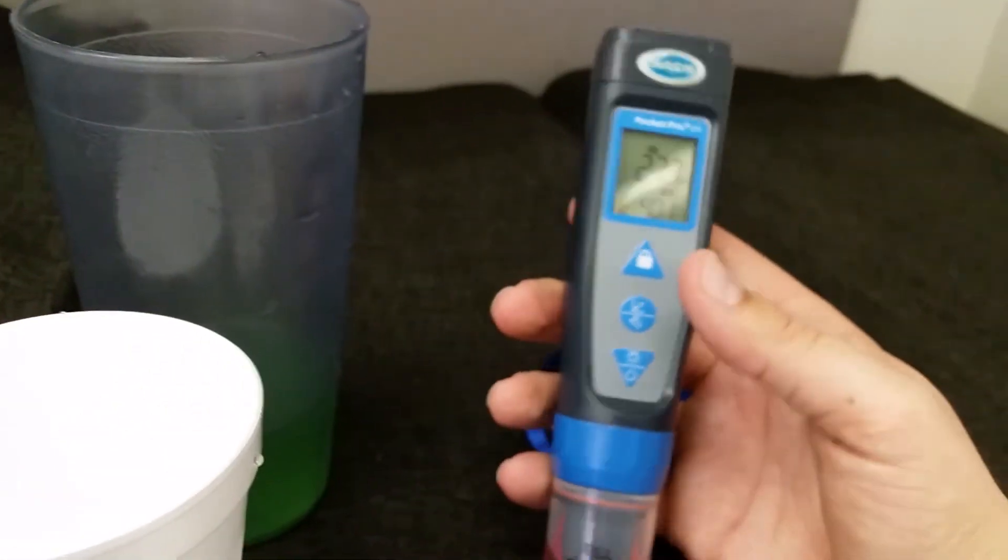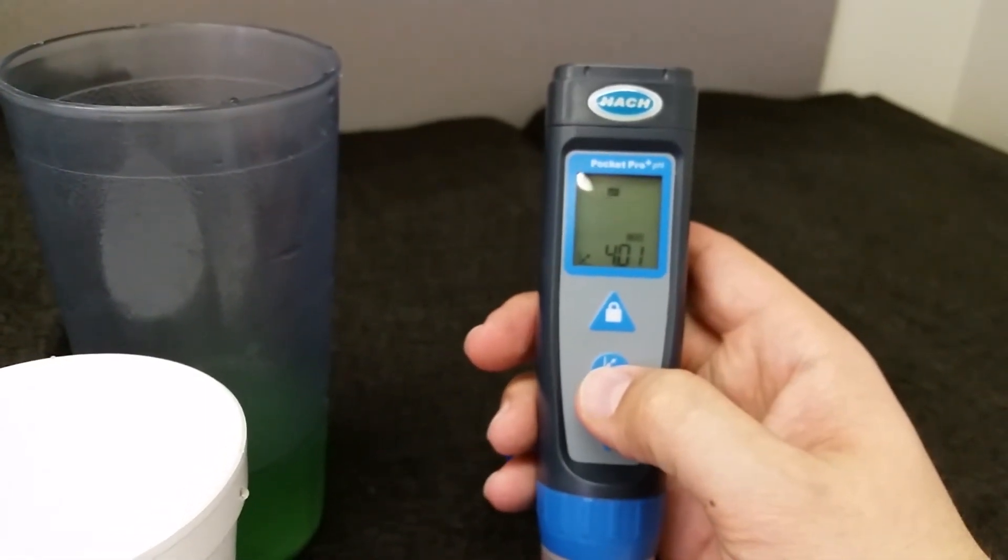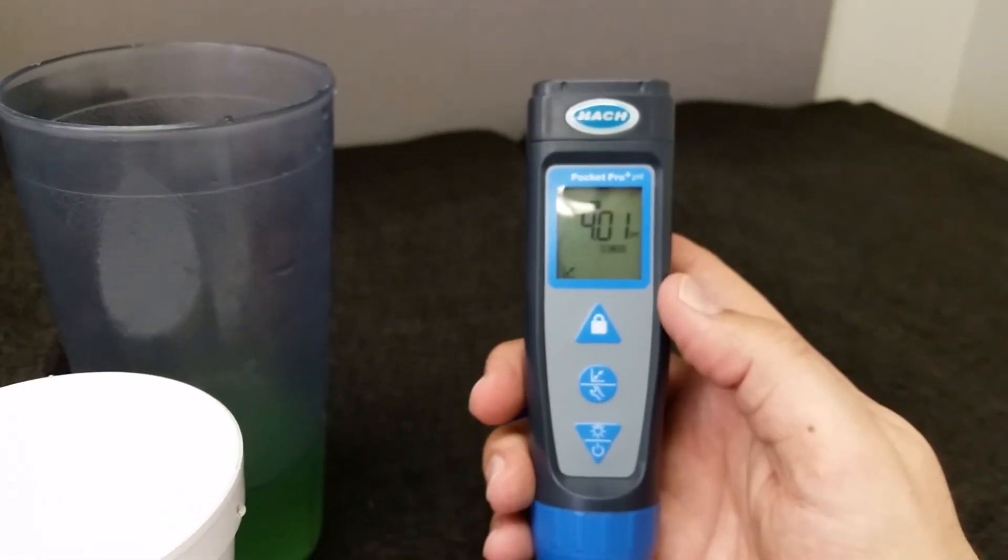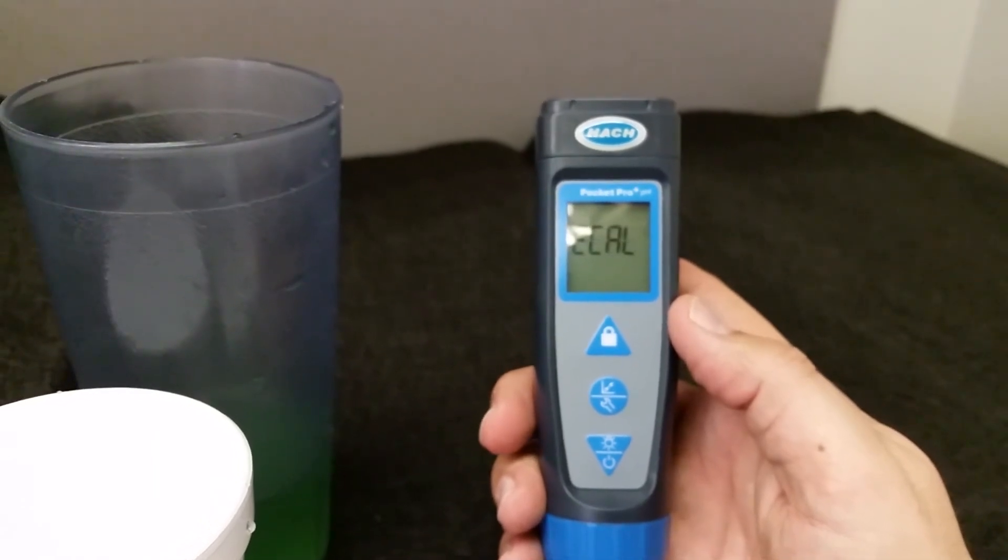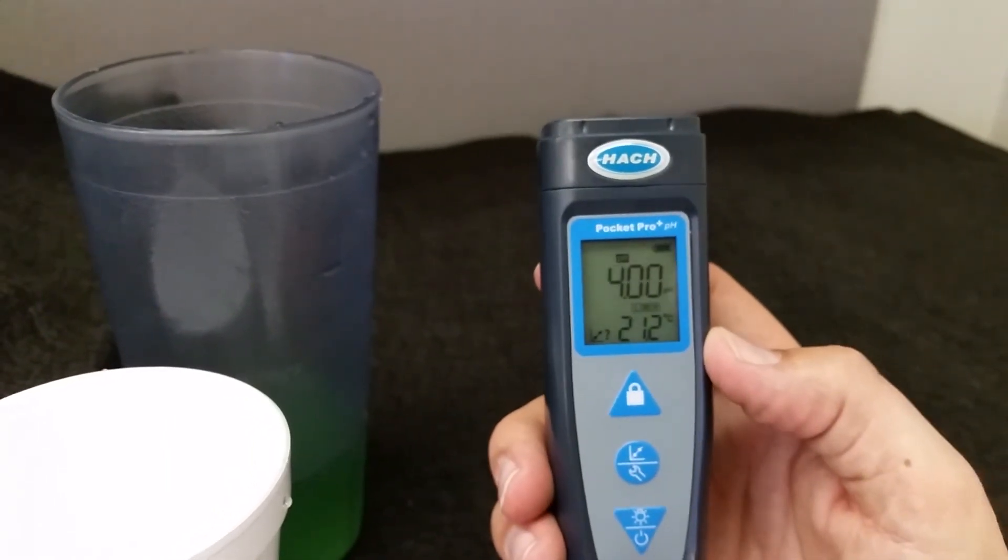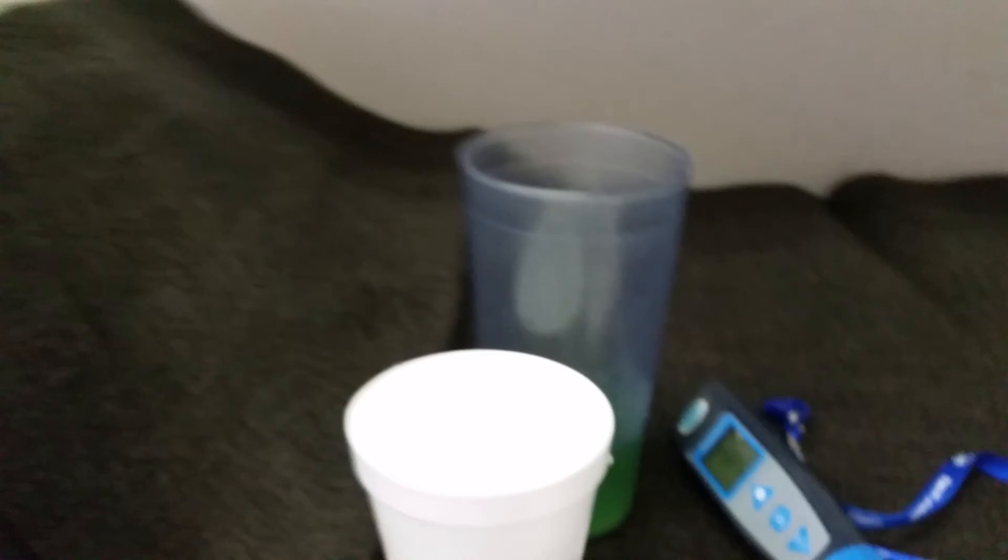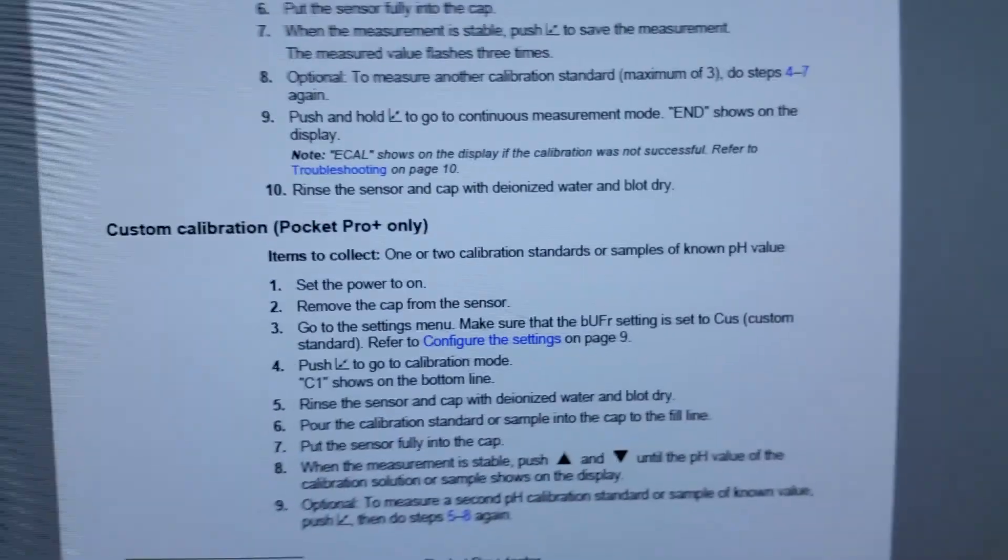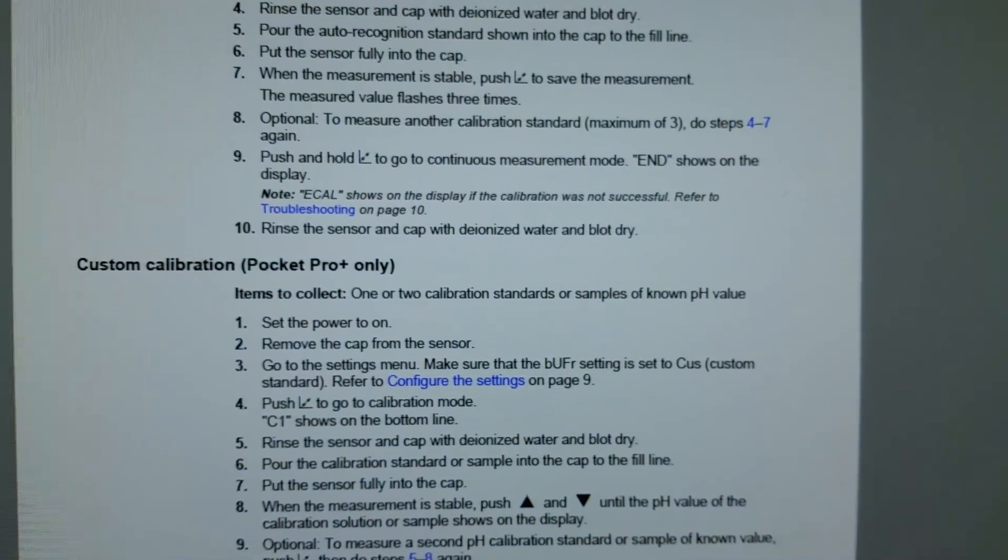Anyways, so once it goes to 4, you would lock that in also. Flash, flash, flash, boom. Now you're done. It says E CAL. Why did it say E CAL? Well, because obviously something went wrong there. So then you have to go to the troubleshooting page, which is on page 10.